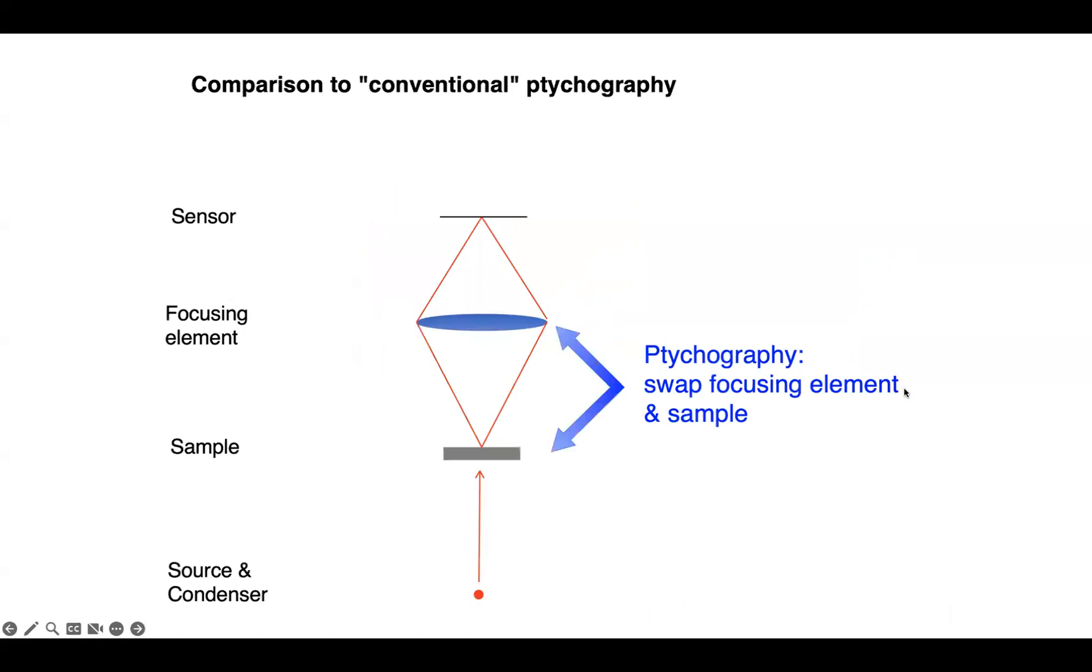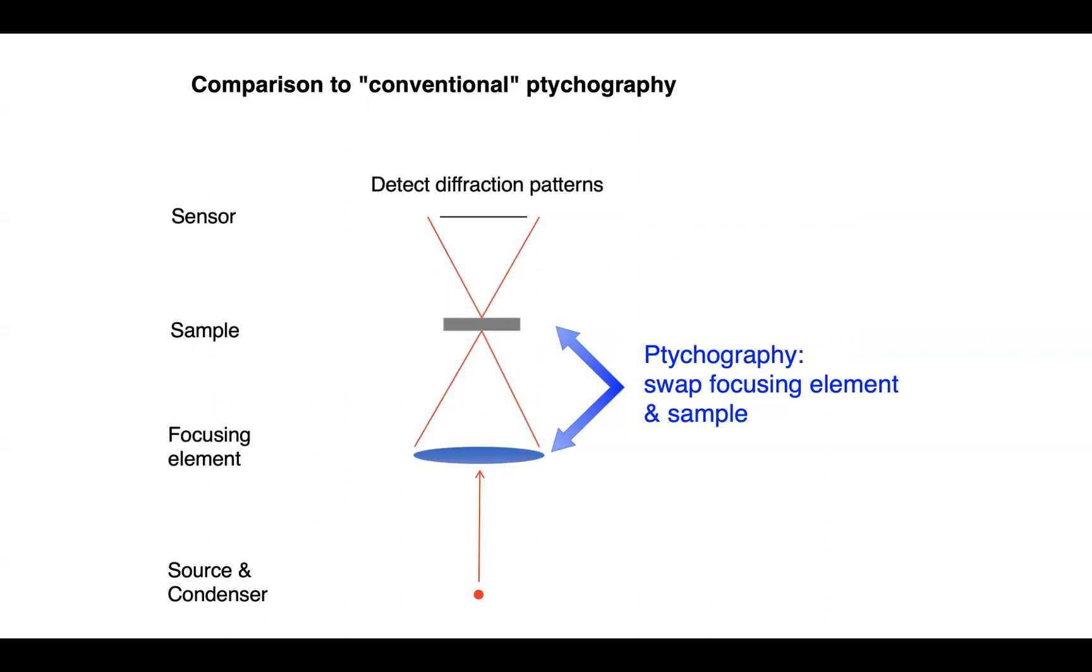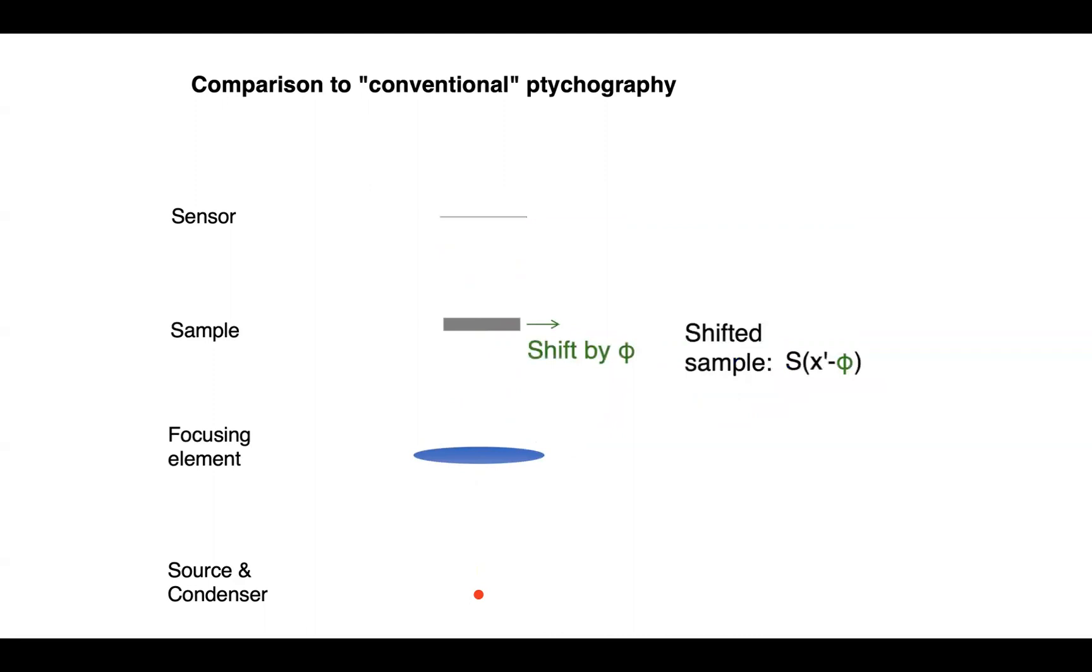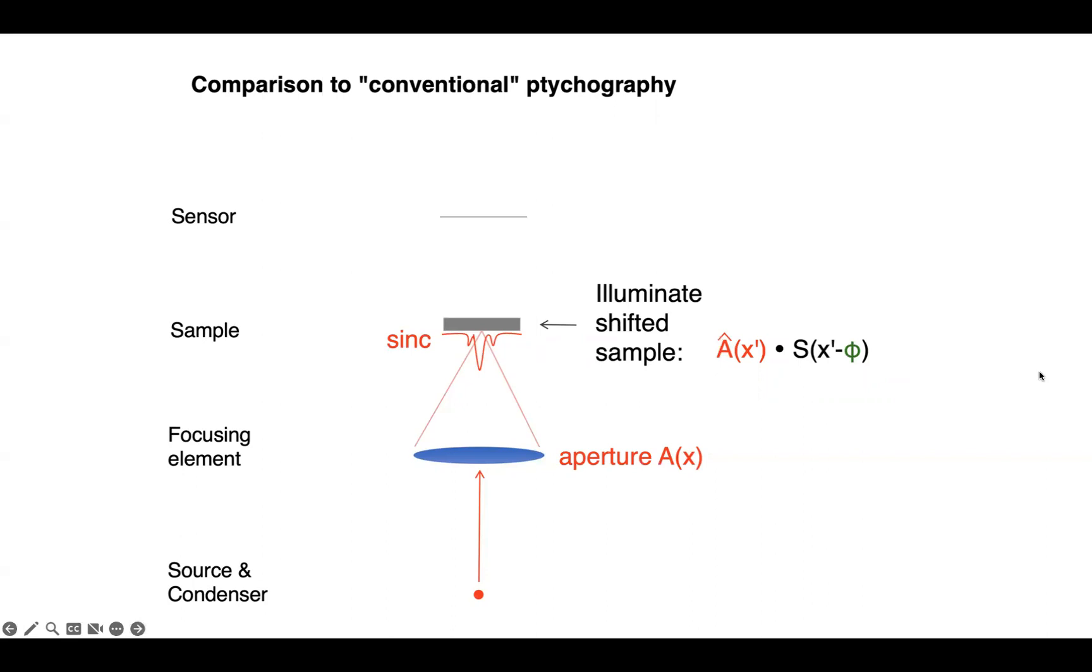So, to mathematically derive ptychography, we can take our simple model and just switch the focusing element in the sample. Now, the focusing element shines light into a small spot onto the sample, and we detected a diffraction pattern. To mathematically model ptychography, we'll model our shifted sample. Here we'll use phi to denote that shift distance. The illuminated radiation will arise from our aperture. It will have propagated some distance, and hence undergone a Fourier transform to form the spot on the sample. That's denoted by a hat. The illumination will interact with the sample, which is denoted by the product a hat and s. The resulting light will then diffract to the sensor, here denoted by a Fourier transform, at which point we can only detect intensities as well, so we get the magnitude squared.